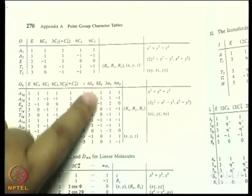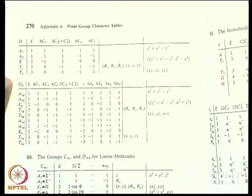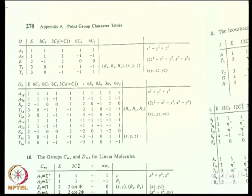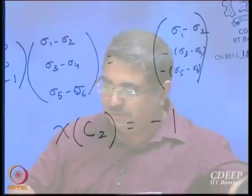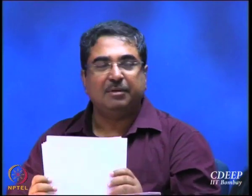When you apply C4 you will get character +1, and when you apply C2 you get character −1. You can satisfy yourselves that these three SALCs actually belong to T1. So what we have learned is how to generate SALCs for irreducible representations of higher dimensionality and how to use the group-subgroup relationship.